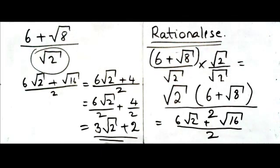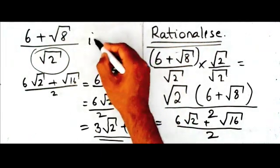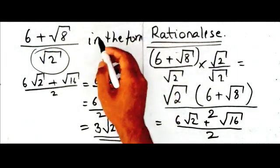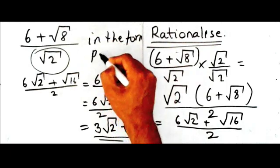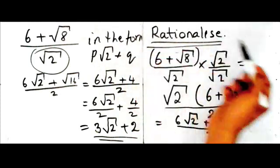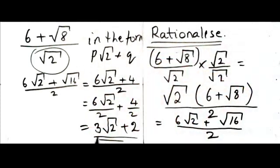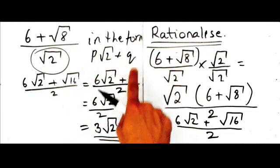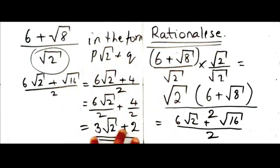They might ask you to write it in the form, in the form P root two plus Q. Now, if you look at that form and our final answer, you can see that the P represent the three, the two represent the two here, and the Q represent the two. And they look the same. So this is how you go ahead and rationalize a fractional set.